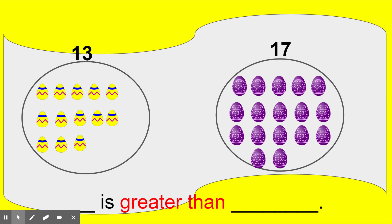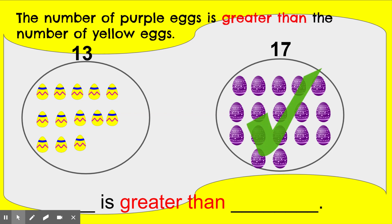What does the word 'greater' mean, boys and girls? Right — it means it's larger or more. I hope I can see your hands nice and big to help us remember that it's more. That's what the special word 'greater than' means. So which one is greater than, the thirteen or the seventeen? The number of purple eggs is greater than the number of yellow eggs. There are four extra purple eggs if we gave them a partner. So we use our sentence frame and say: seventeen is greater than thirteen. Seventeen is greater than thirteen.